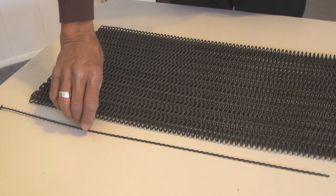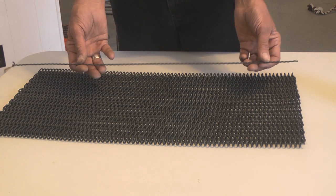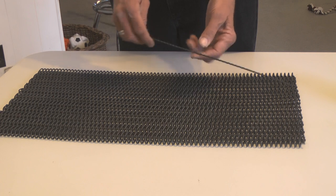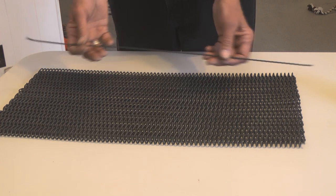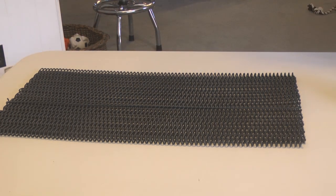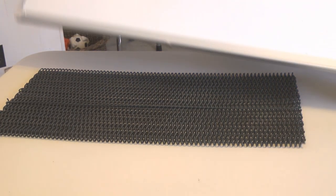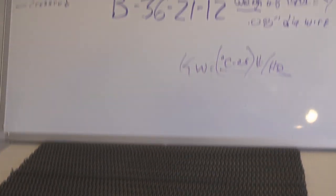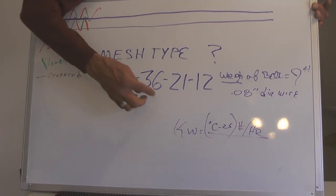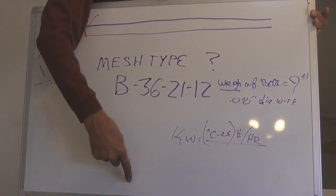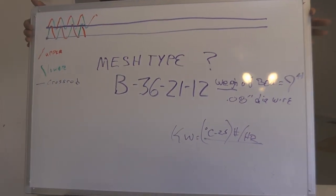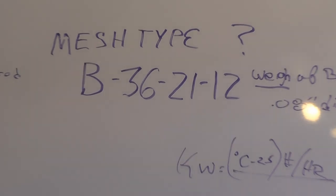The third number—the belt specs all have three numbers—is the wire gauge. The wire we measured earlier was 0.08 inches, which is 12 American wire gauge. So the entire spec for the belt, the three numbers put together for this particular belt: 36, the number of spirals across 12 inches; 21, the number of cross rods longitudinally in 12 inches; and 12, the wire gauge. So 36-21-12 is the spec by which that belt is known.